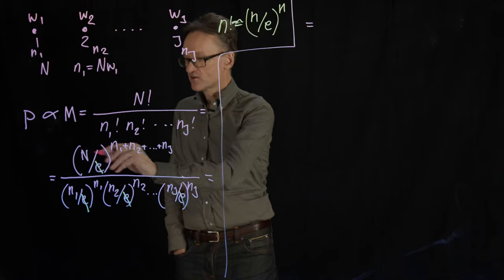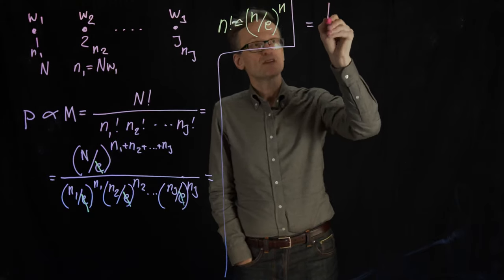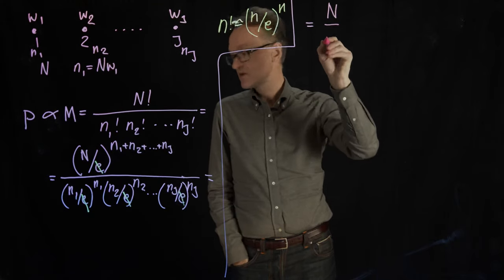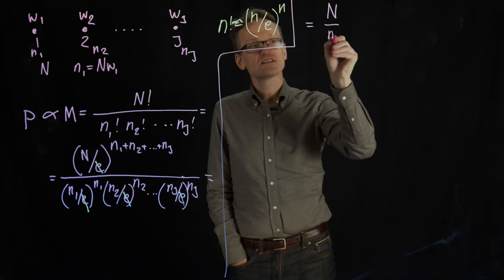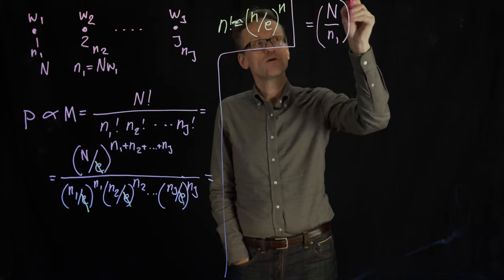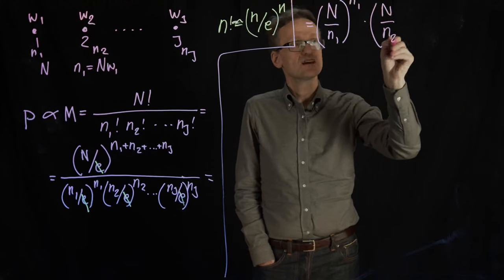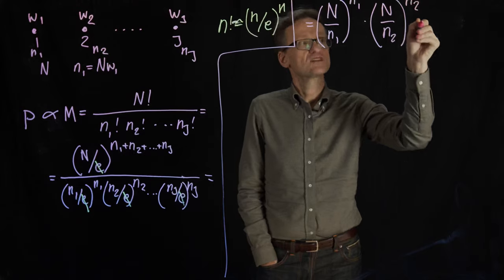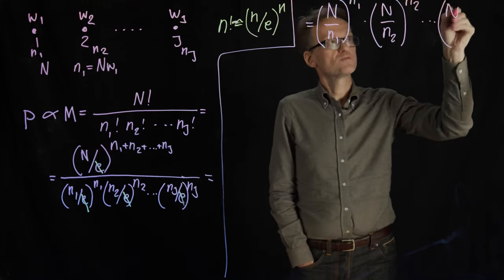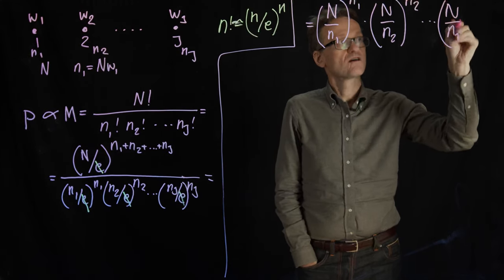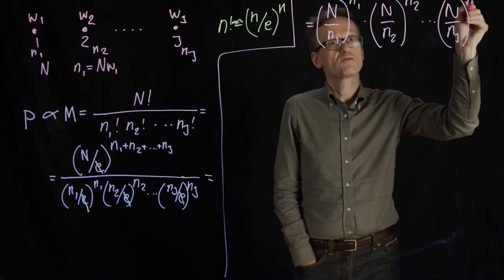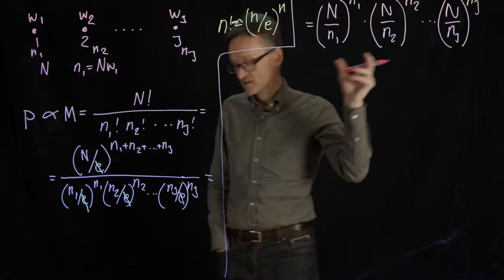This then corresponds to uppercase N divided by lowercase n1 raised to the power of n1 multiplied by uppercase N divided by lowercase n2 raised to the power of n2, etc., all the way up to nj raised to the power of nj. I hope you can see that up there.